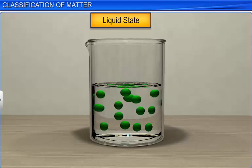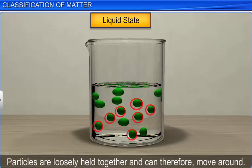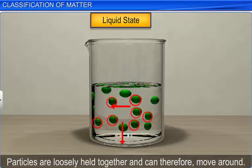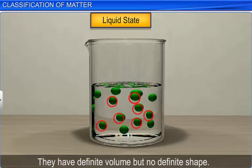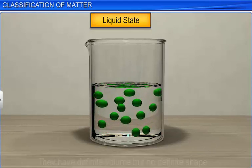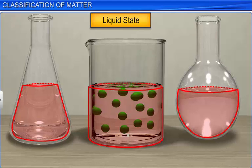In liquid state, the particles are loosely held together, and can therefore move around. They have definite volume, but no definite shape. They take the shape of the container in which they are placed.